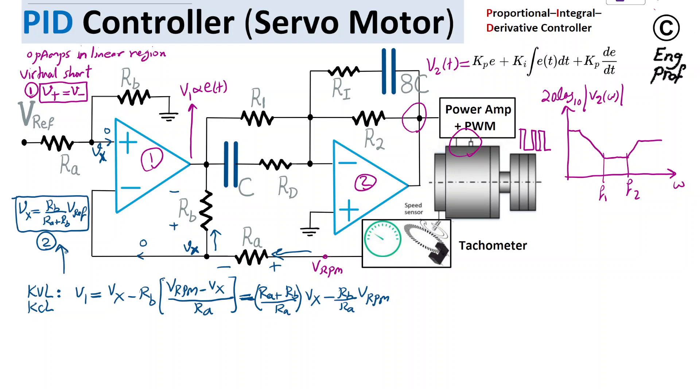Using equation 2 and substituting for Vx, I'm going to get Ra plus Rb divided by Ra times Rb over Ra plus Rb times VREF, minus Rb over Ra VRPM. This cancels out, and this portion is common, so I can factor it out. V1 at the output of op-amp 1 is Rb over Ra times VREF minus VRPM.